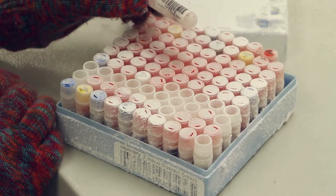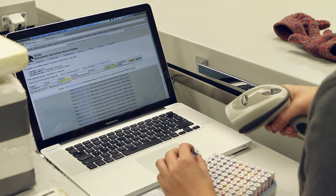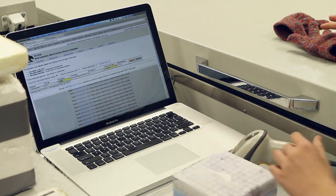If you put it in the minus 80, you slow that process down, but the enzymes are still breaking down the DNA, but at a slower pace. By putting it in liquid nitrogen tanks, it stops it pretty much completely.